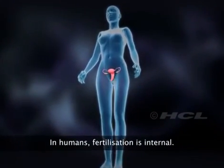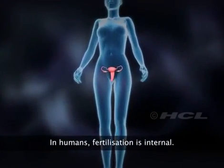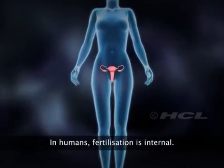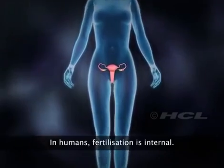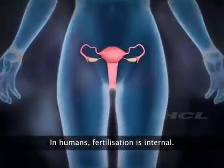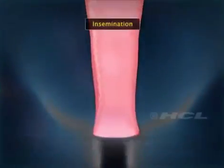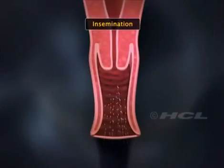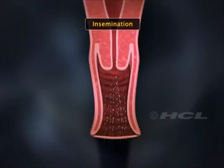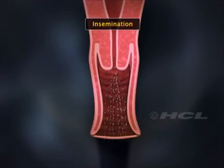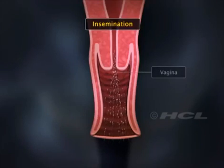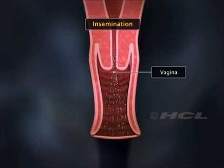Fertilization in humans is internal. It takes place inside the body of the female. Semen, which contains the sperms, is introduced into the female genital tract during the act of copulation. The deposition of sperms in the vagina is called insemination.